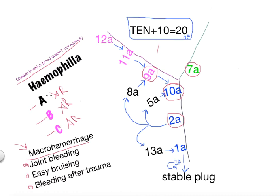We'll just integrate types on our diagram. In type A, the factor that goes missing is 8A. In type B, the factor that goes missing is 9A as an activated one. And the factor that goes missing in C is 11.